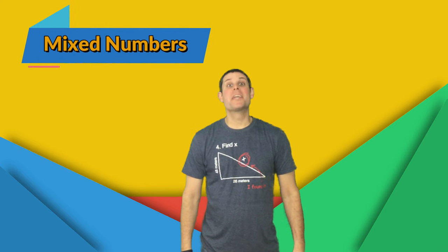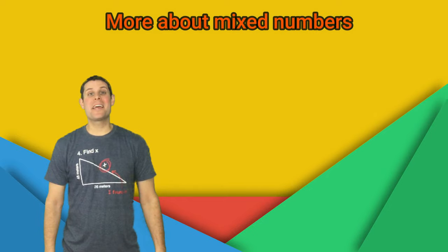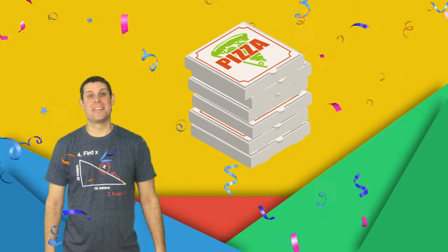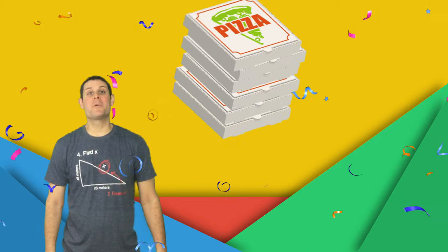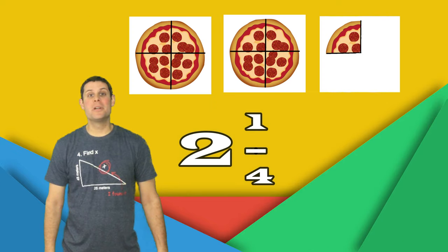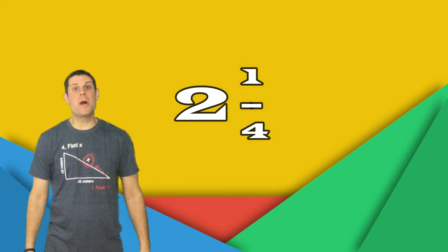Mixed numbers can be a bit tricky because they are whole numbers and fractions. Let's say you had a big party and you ordered a ton of pizzas, and then when everyone leaves, you look at what's left over and you have two whole pizzas and one fourth — that's actually a mixed number. The mixed number two and one fourth is the most common way we would describe how much pizza is left.